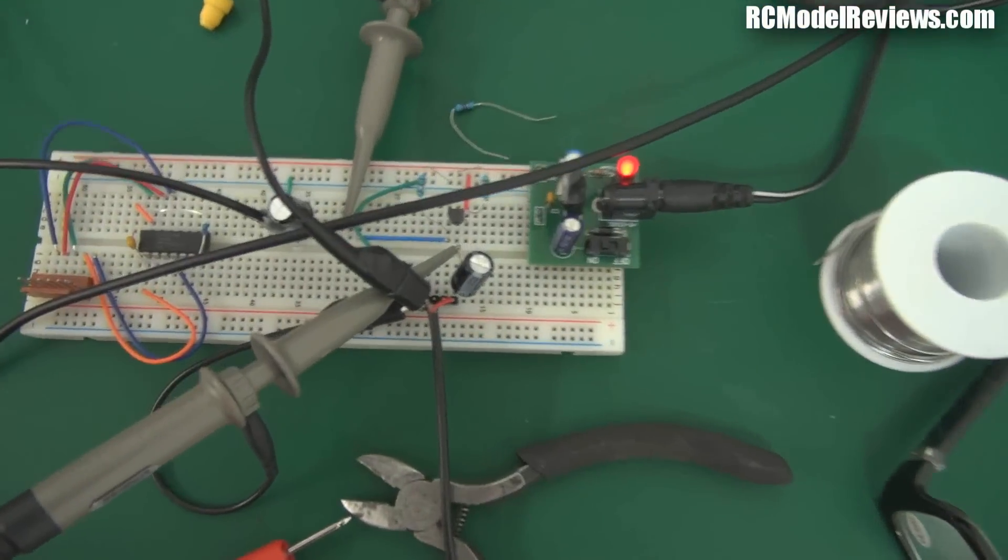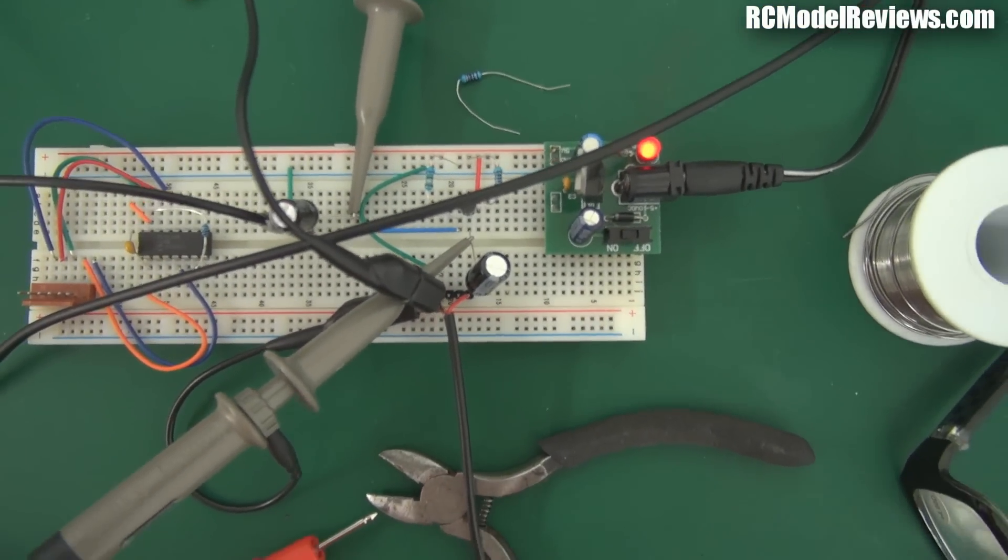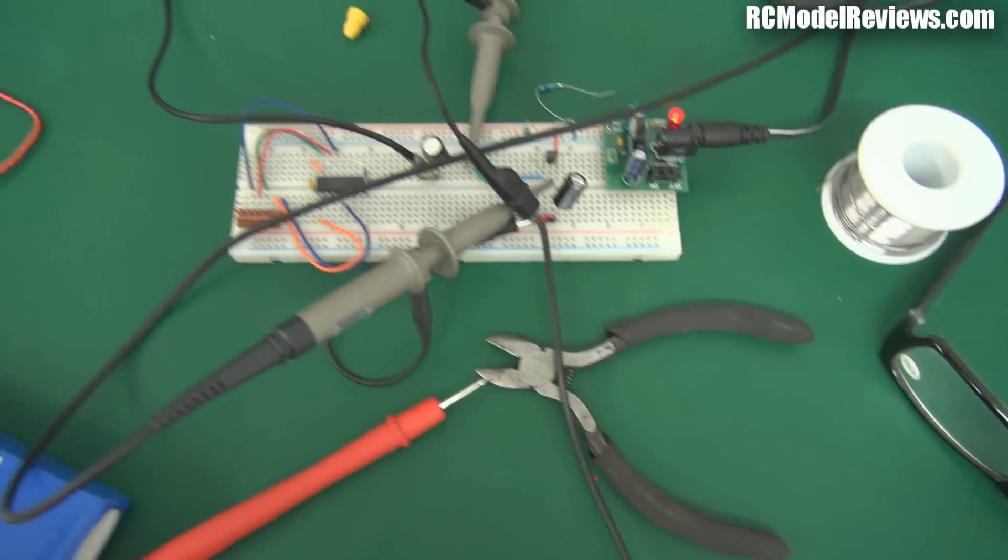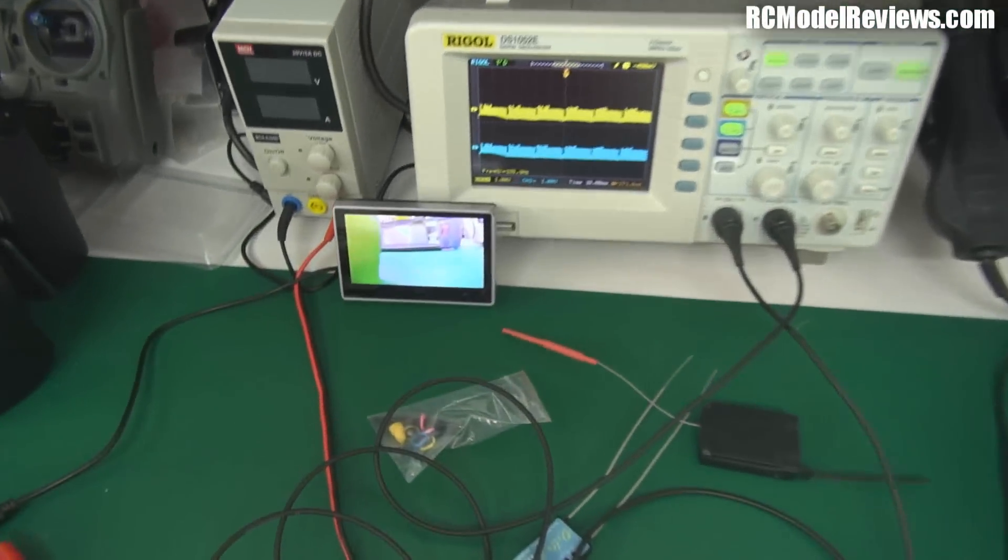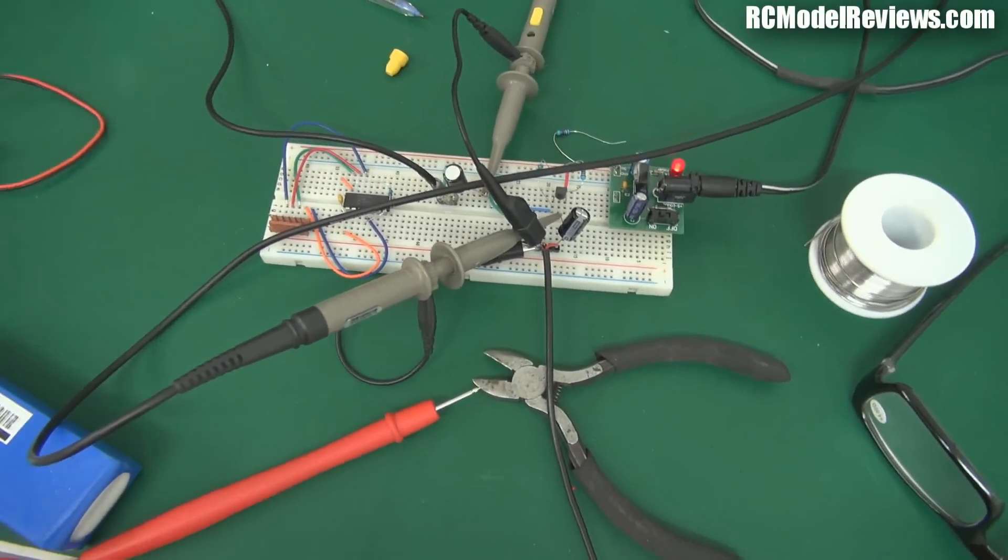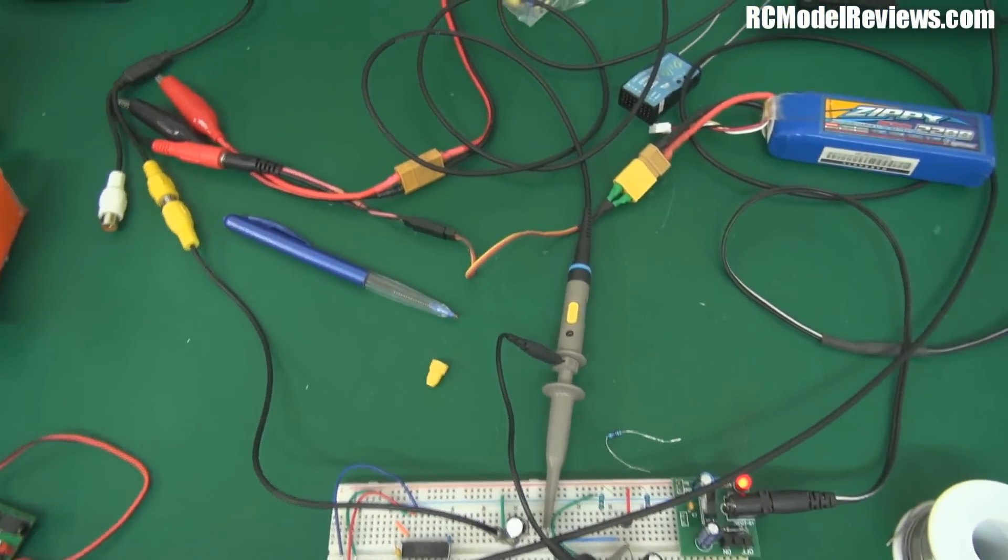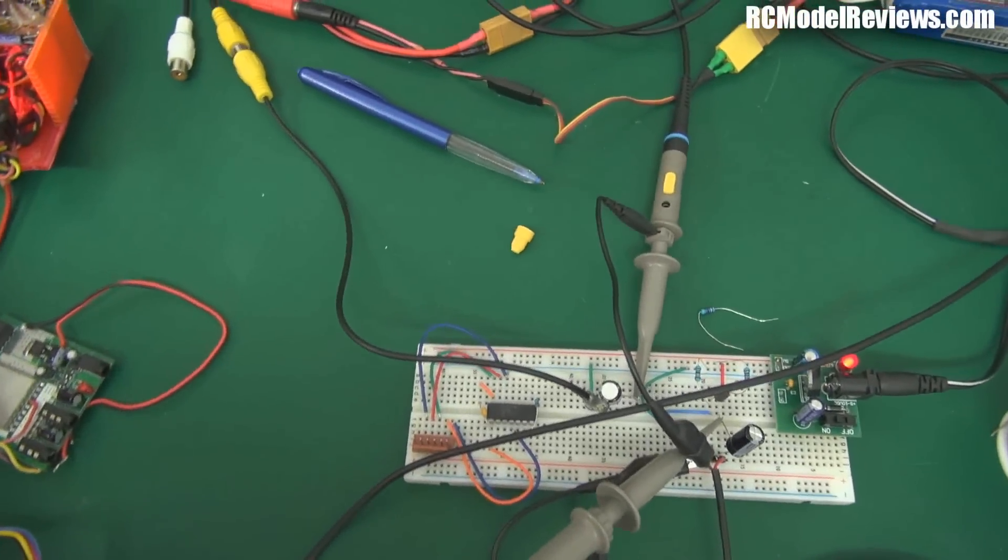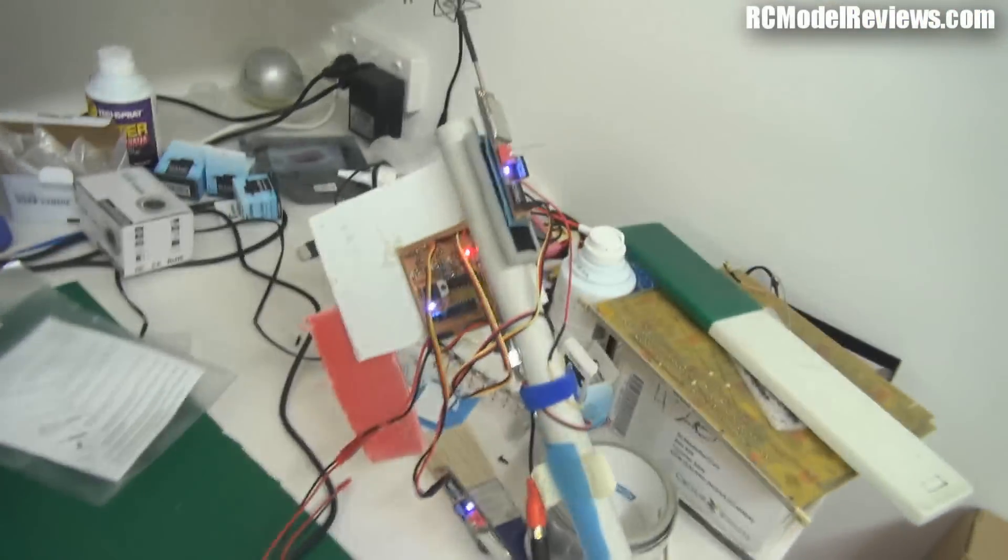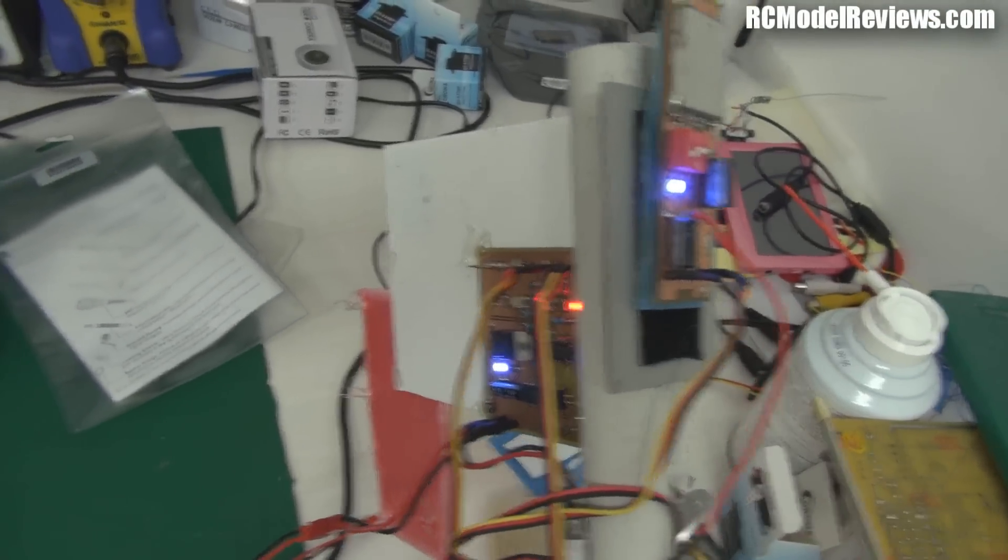This little board is just buffering the video signal from the diversity controller. I noticed when I was doing some testing on the diversity controller that if I loaded up the output too much, if I had a DVR and some goggles and an LCD, the level dropped so much that you'd actually get drop out on some of the video signals. So I thought I don't want that because people probably want to load these things up with heaps of stuff.